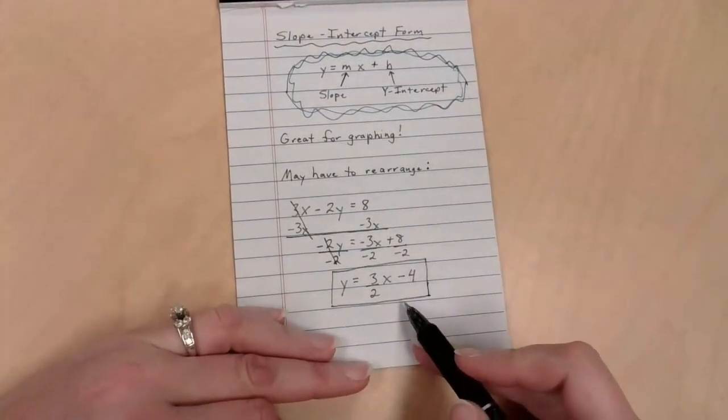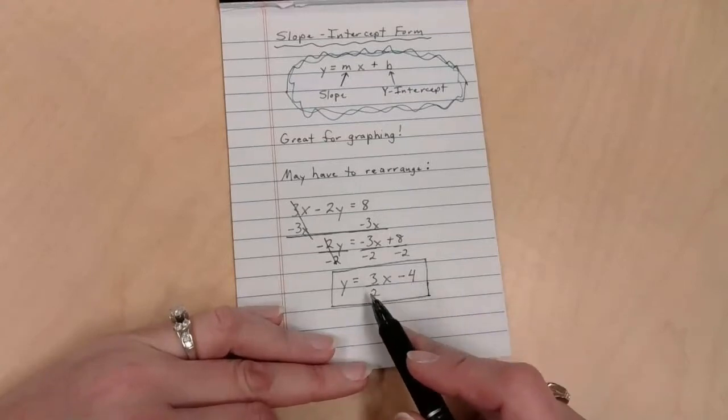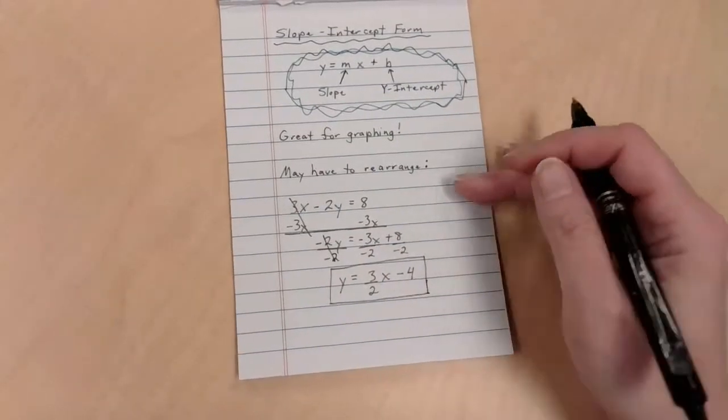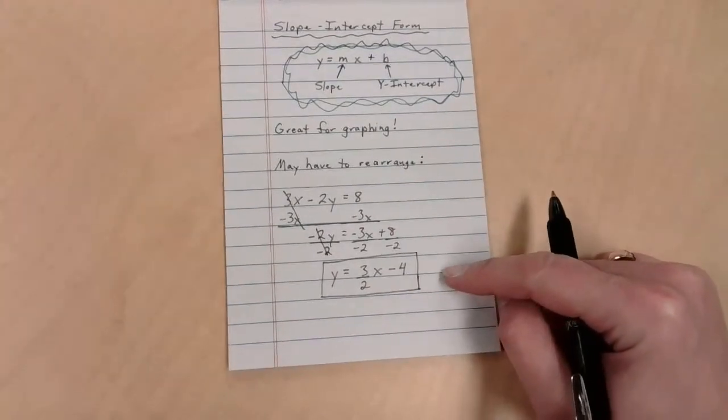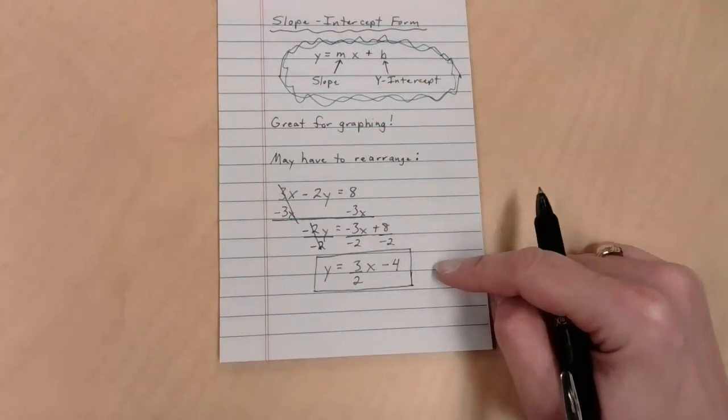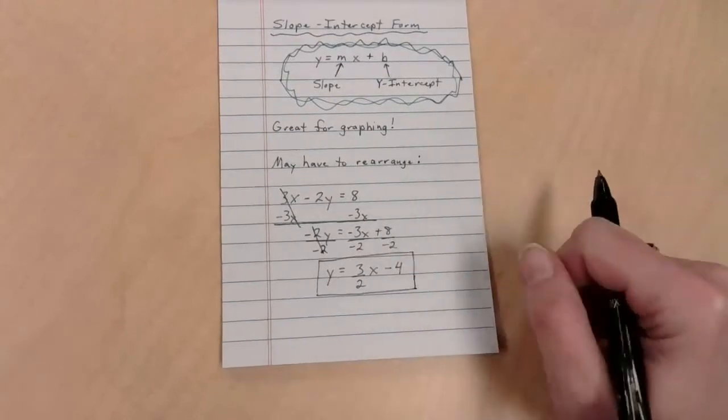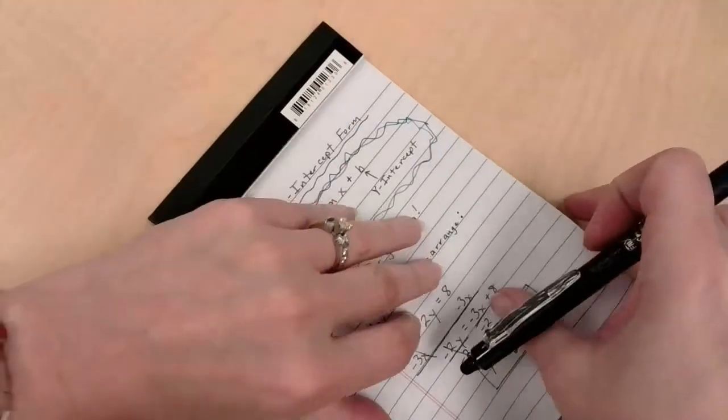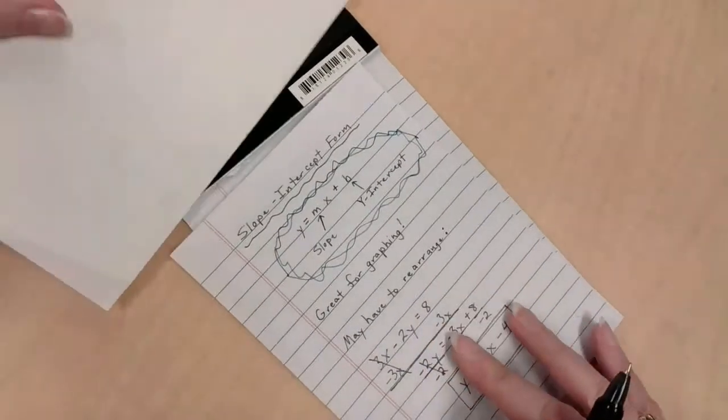And now really easy for me to graph. Where am I going to start? Negative 4 on the y-axis. From there, where am I going to go? Up 3 over 2, rise over run. So rearranging is a nice thing to be able to do. Here's the bad news. If you make a mistake anywhere in here and graph, you're now graphing the wrong line. So you've got to make sure that you're paying attention.